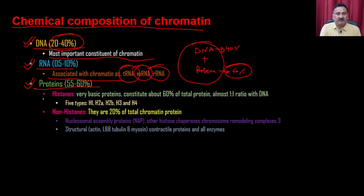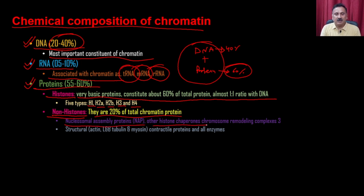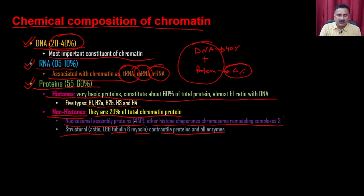Within chromatin proteins, there are two types: histone proteins and non-histone proteins. Histone proteins are very basic proteins constituting about 60% of total protein, present in a 1:1 ratio with DNA. The five types are H1, H2A, H2B, H3, and H4. Non-histone proteins are about 20% of total chromatin protein, required for nucleosomal assembly (e.g., NAP), chromatin remodeling complexes, and structural proteins such as actin, tubulin, and myosin.